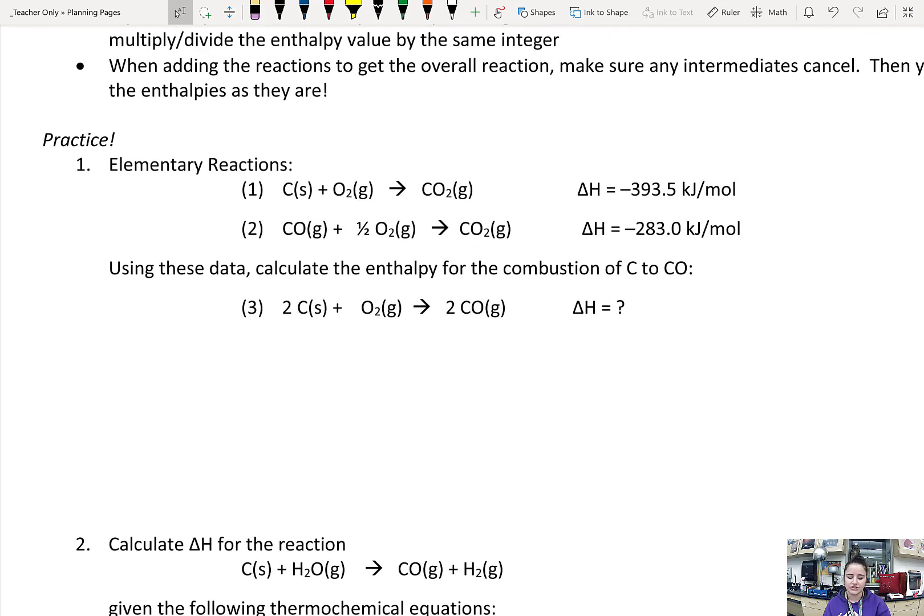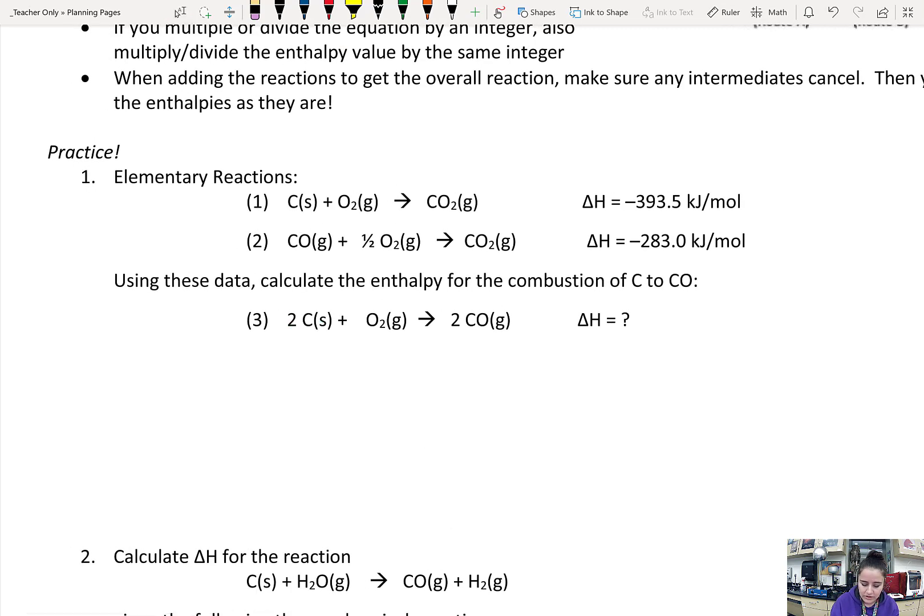So, we have two elementary reactions. We have carbon solid reacting with oxygen gas to produce carbon dioxide, and we have carbon monoxide reacting with oxygen gas to produce carbon dioxide. These are both kind of written as formation reactions, or the second one isn't - it just has that one half coefficient. So if we want to look at this reaction, we have to get there from our other two. Starting with this first one, I need that carbon solid, and there it is in that one. But the coefficient is different.